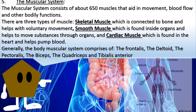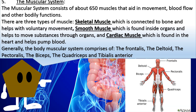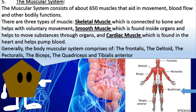5. The muscular system consists of about 650 muscles that aid in movement, blood flow, and other bodily functions. There are three types of muscles: the skeletal muscle, which is connected to bone and helps with voluntary movement; the smooth muscle, which is found inside organs and helps to move substances through organs; and cardiac muscle, which is found in the heart and helps pump blood. Generally, the body muscular system consists of the frontalis, the deltoids, the pectoralis, the biceps, the quadriceps, and tibialis anterior.